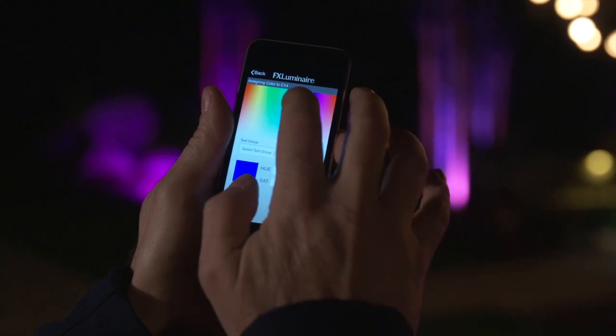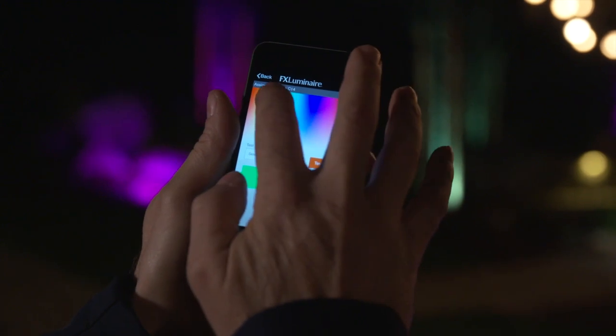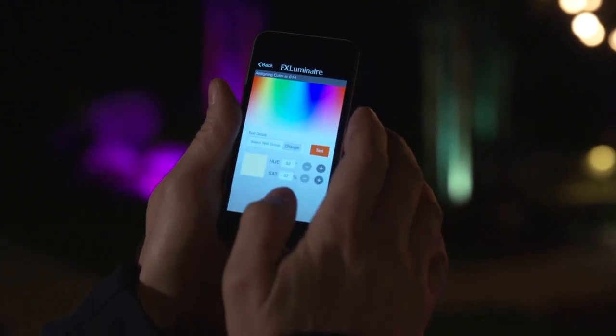Now that the Luxor is connected to your home Wi-Fi network, download and install the Luxor app onto your smart device to control your outdoor lighting system.